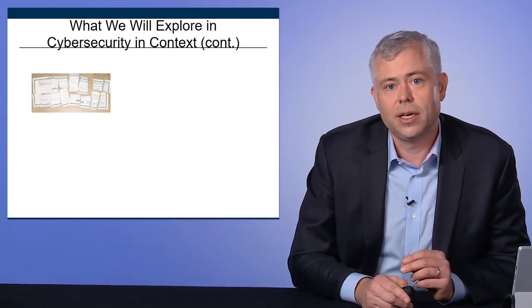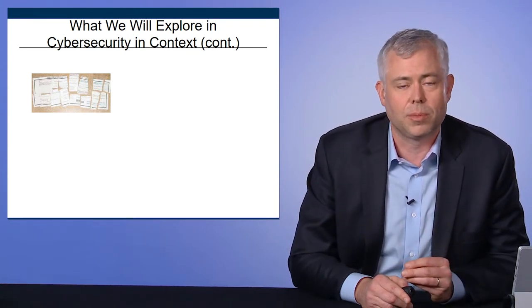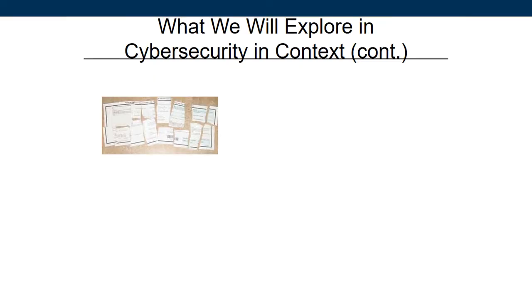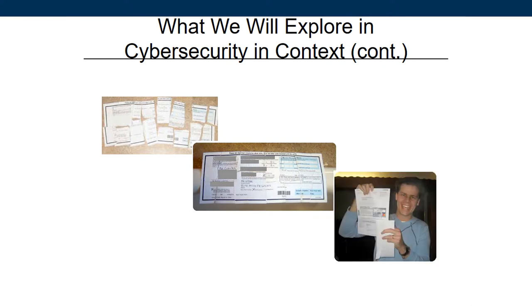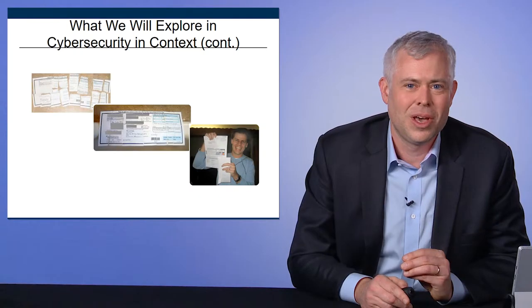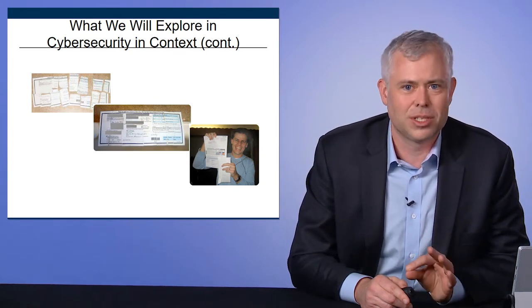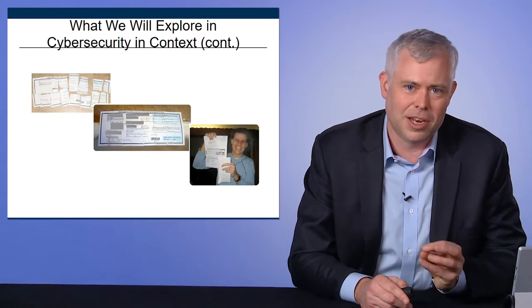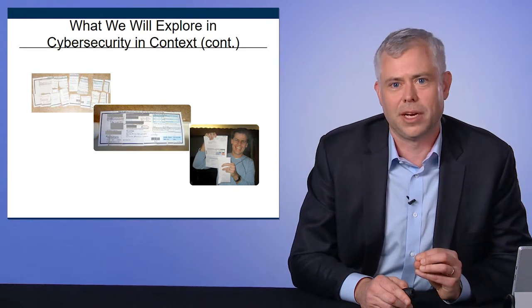We'll also talk about identity theft. Identity theft is one of the major reasons why we have cybersecurity problems. I'll show funny examples such as this prankster who got a credit application, tore it up, reassembled it, taped it together haphazardly, sent it in, and nonetheless got a credit card. We'll see that incidents like this explain a lot of problems in cybersecurity — deep economic and political problems that are very difficult to deal with, problems that you're going to have to manage in your career.